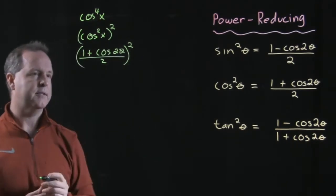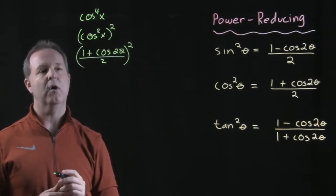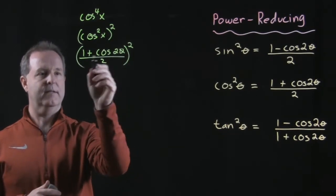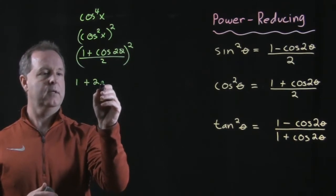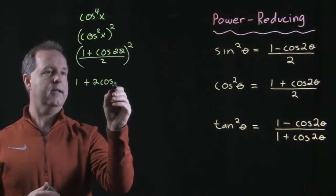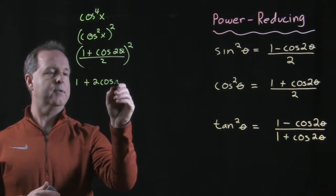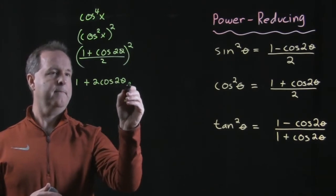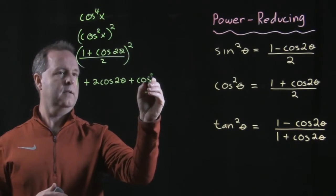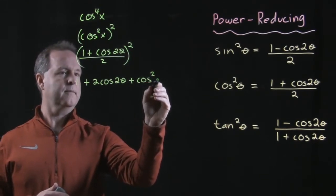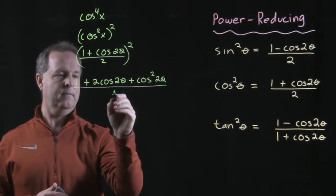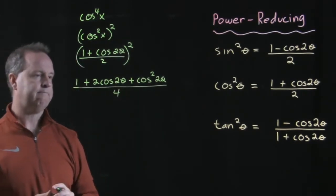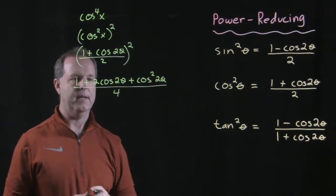Now I have to remember how do I distribute that power of 2 all the way through. So the top is a foil so that's a 1 plus a 2 cosine 2 theta plus a cosine squared of 2 theta all over a 4. All right, you guys with me on that one?